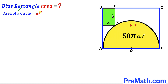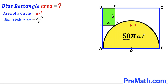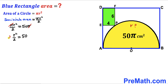The area formula is πr², and since we're dealing with a semicircle, the area formula becomes πr²/2. In our case the semicircle area is 50π, so we write πr²/2 = 50π. The π cancels from both sides, giving r²/2 = 50. Multiplying both sides by 2, the 2s cancel and r² = 100.